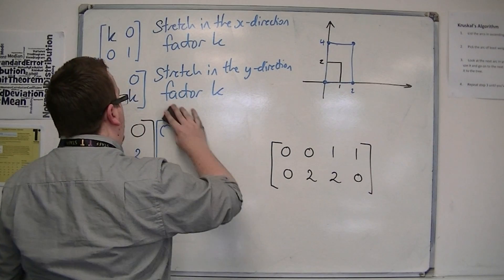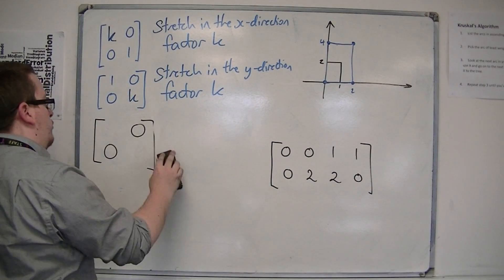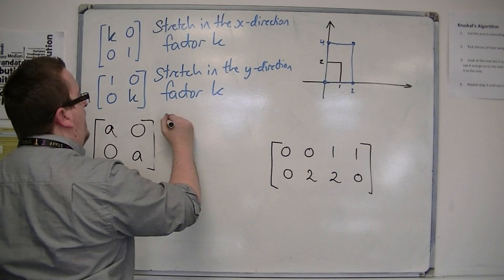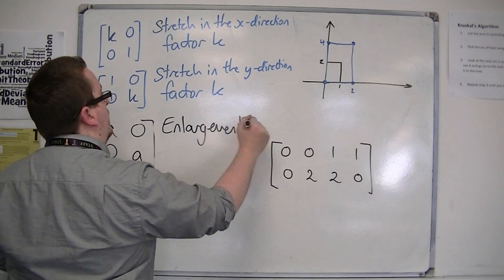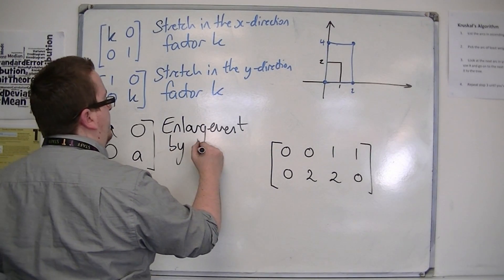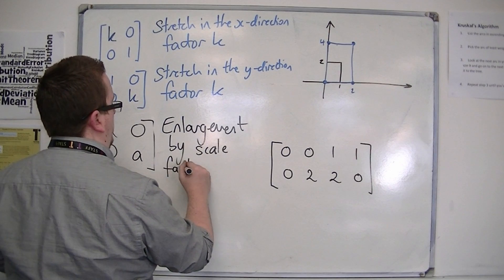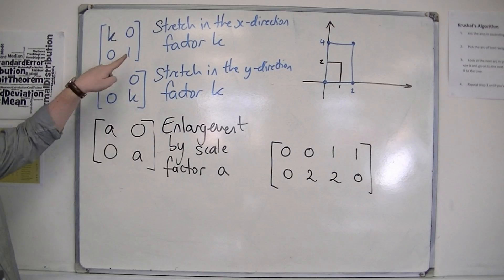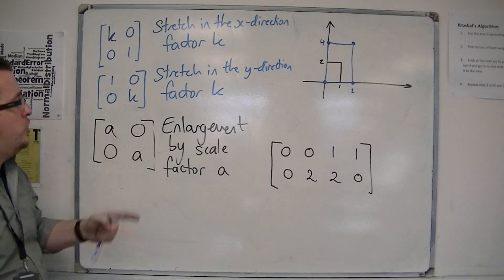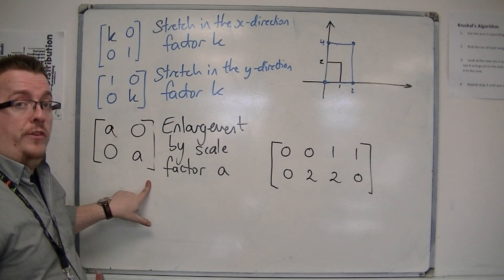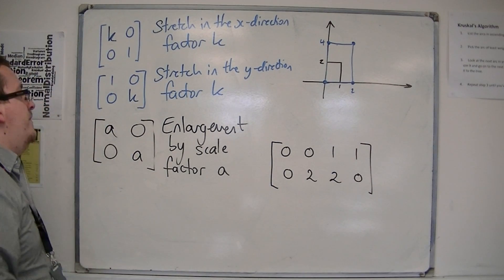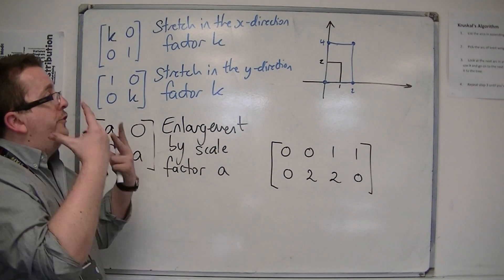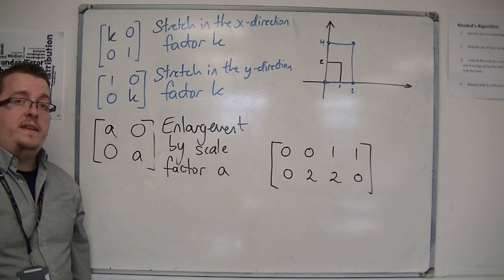If we generalise the matrix [A,0;0,A], this is an enlargement by scale factor A. So we've got stretches in either the x-direction or y-direction, and if we do it in both directions at the same time by the same amount, this is an enlargement by scale factor A. Those are the stretches and enlargements we need to know about.